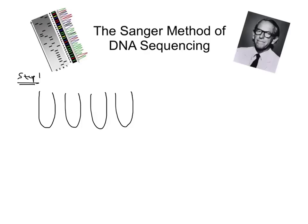We have four test tubes and we're going to label them A, T, C, and G. Now that clearly represents the four bases in DNA that we have: adenine, thymine, cytosine, and guanine. And just for a visual, I'll add a little bit of colour to make it different — A is blue, red for T, green for C, and pink for G — just to keep this a bit more simplified and visual. So we've got four test tubes labelled A, T, C, and G.